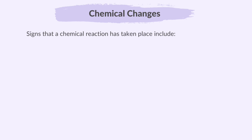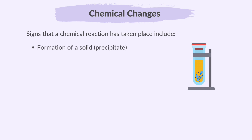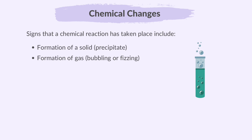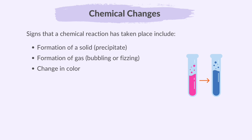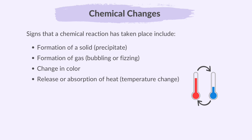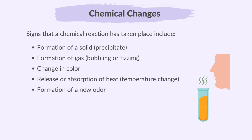Signs that a chemical reaction has taken place include: formation of a solid, formation of gas that is bubbling or fizzing, change in color, release or absorption of heat (that is temperature change), and formation of a new odor. These signs indicate that the reactants have undergone a chemical change resulting in the formation of new substances.